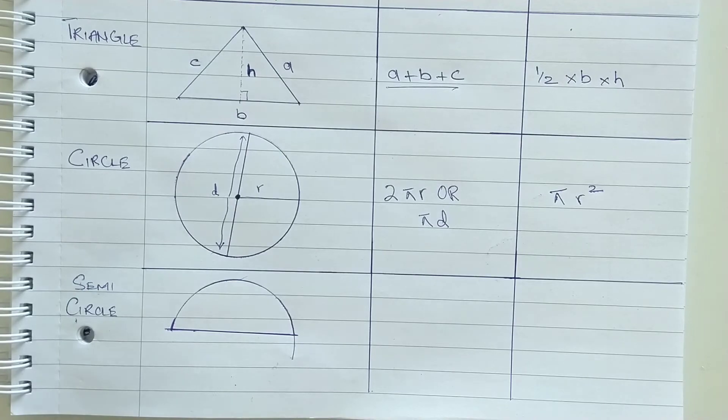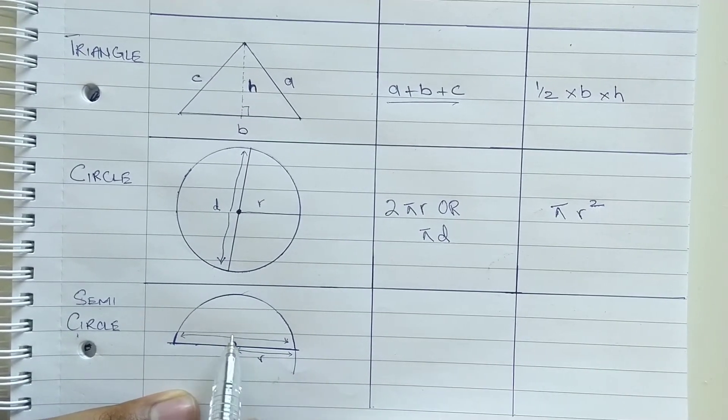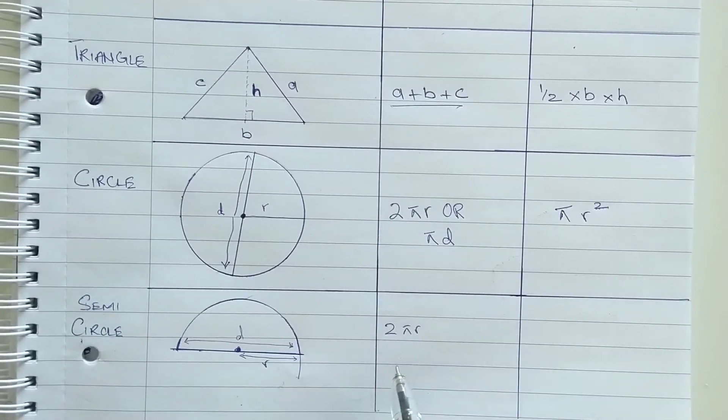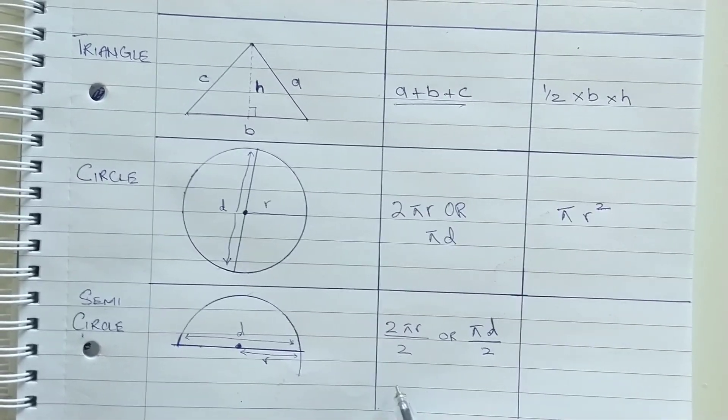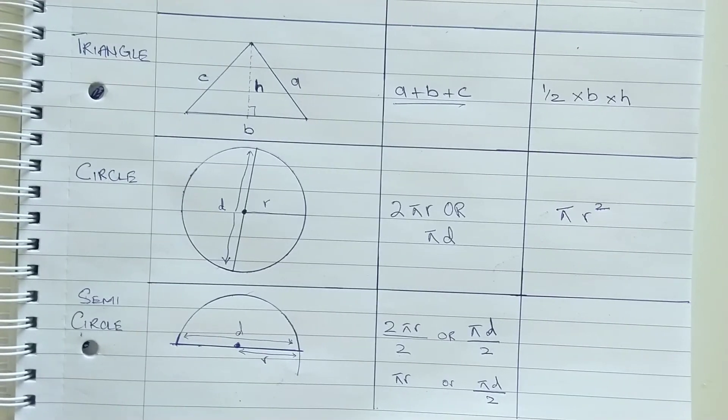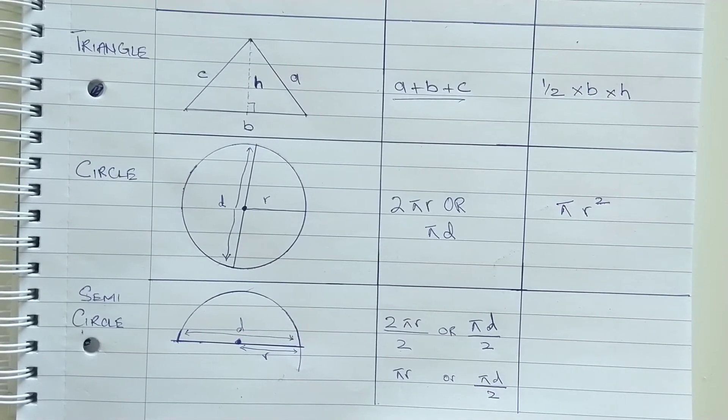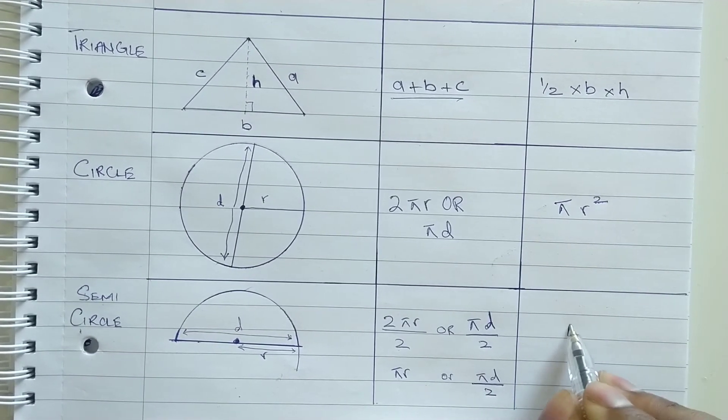Lastly, we have semi-circle. As the name denotes, it's half of a circle. Being half of a circle, every formula that of a circle is divided by 2. The formula for area becomes pi R square upon 2.